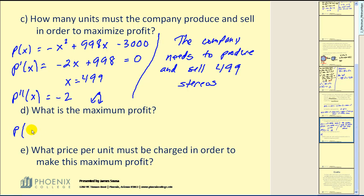Well, in order to find the maximum profit, we need to evaluate the profit function when x equals 499. Here's our profit function, replacing x with 499. I've already done this. We're going to get $246,001.